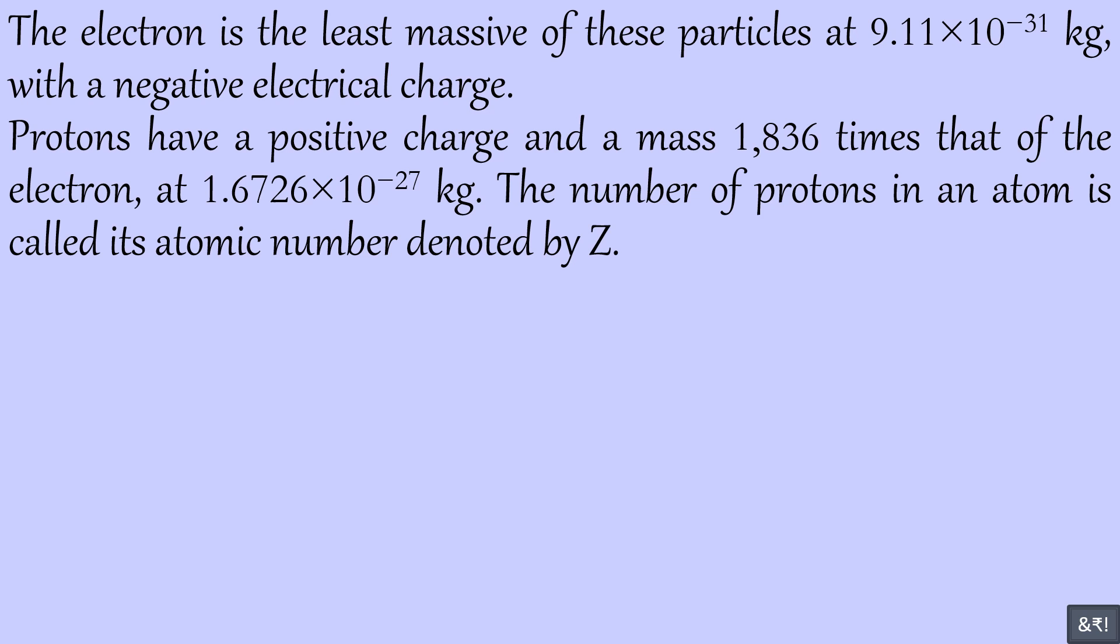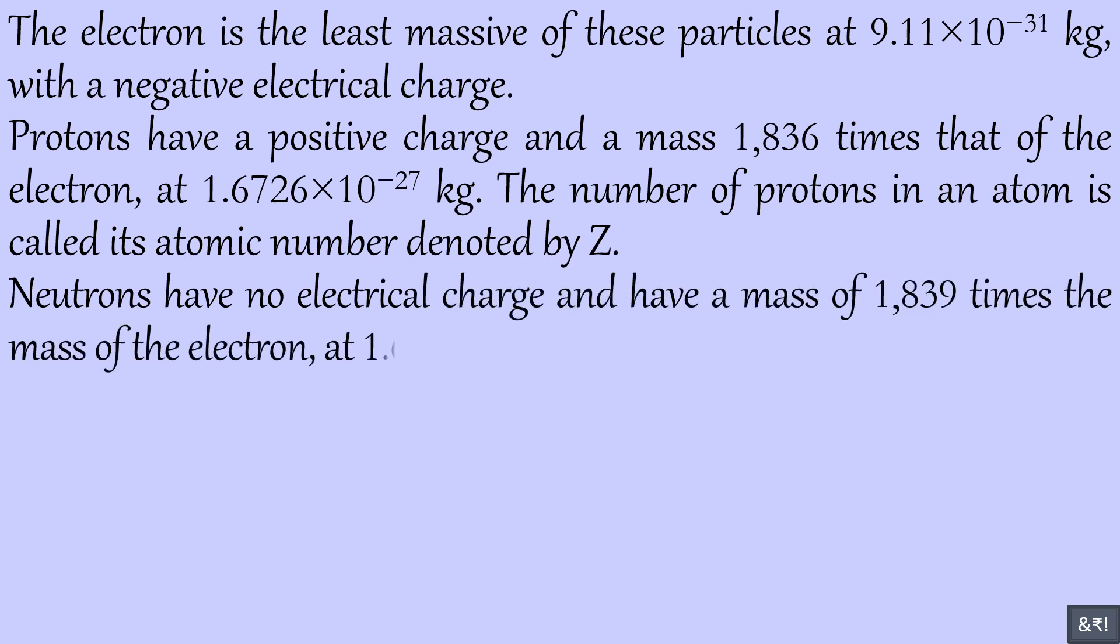The number of protons in an atom is called its atomic number denoted by Z. Neutrons have no electrical charge and have a mass of 1839 times the mass of the electron, at 1.6929 times 10 power negative 27 kilograms, almost same as that of protons.